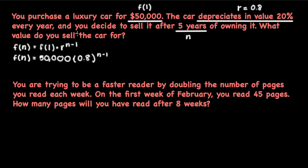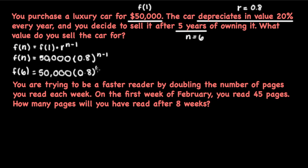The question asks what value do you sell the car for after five years of owning it. Keep in mind that the first year the car is worth $50,000, which means after five years we're calculating what the car is worth in its sixth year. That means we plug in 6 for n. So f(6) = 50,000 times 0.8 to the 6 minus 1, which equals $16,384. The car is going to be worth this amount after five years of owning it.